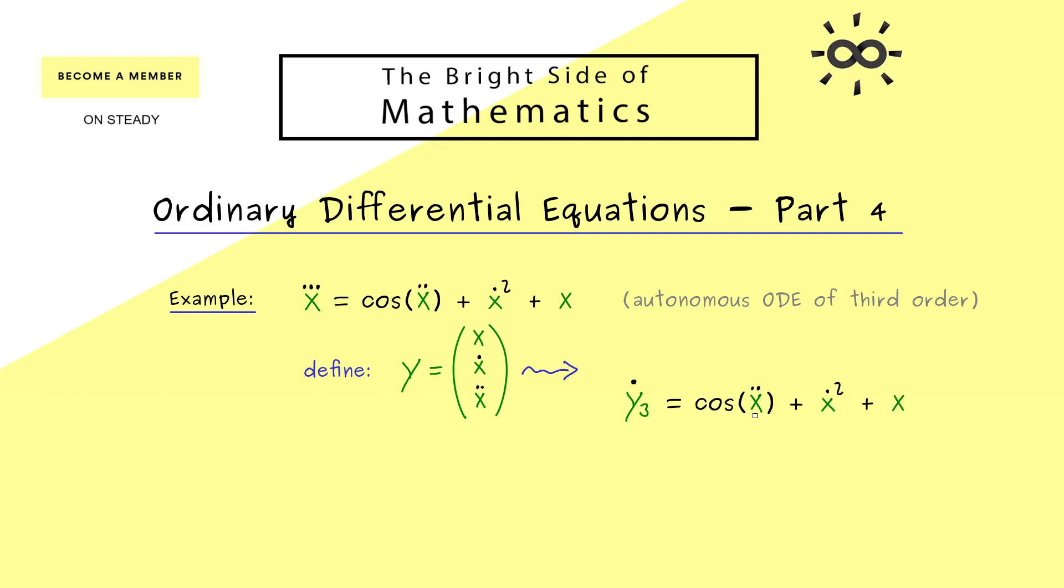And then on the right hand side we can also substitute all variables x. Again the second derivative here is our y3, then the first derivative is y2, and x itself is y1. There you see this is the whole idea. Now the first derivative is the highest order that occurs.